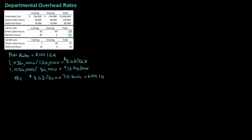I could also use the machine hour rate — remember a company picks one or the other. So using machine hours: $12.95 per machine hour times 85 machine hours equals $1,100.75. That is a huge difference between those two numbers.